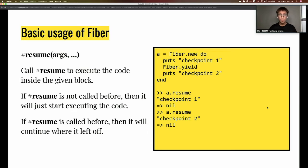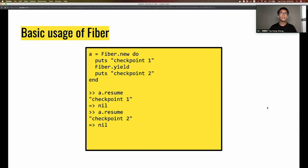If it's the first time you call resume on that instance of the Fiber, it will simply start executing the code from the top. If it's been paused before, then when you call resume again, it will start from the yield where it was paused. In this example, when we call resume, it prints checkpoint one and pauses at yield. When we call resume again, it prints checkpoint two and the Fiber ends. If you call resume again, it will throw an error.